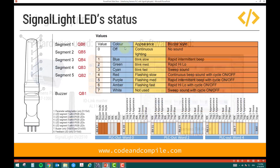Now let's understand the structure of this smart light. The smart light has various segments — segment 1, 2, 3, 4, and 5, starting from the top, as you can also see in the video. There is also a buzzer installed at the bottom.